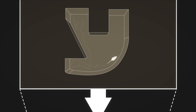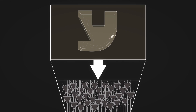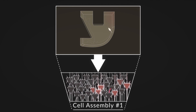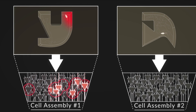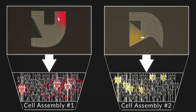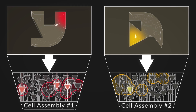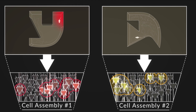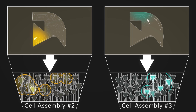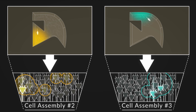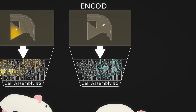We found that these cell assembly patterns formed internal representations of space. Each pattern detected was only active in a particular environment, and only when the animal visited specific locations within that environment, with different patterns representing different locations.